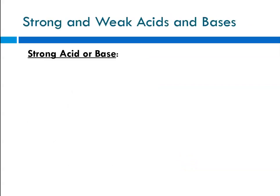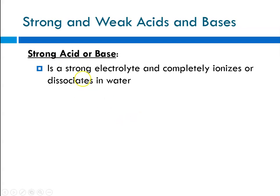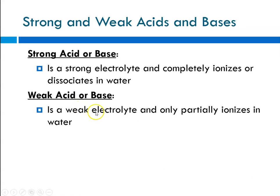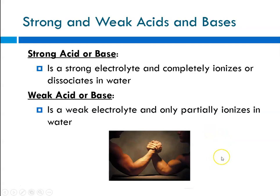We'll get into the other definitions of acids and bases shortly, but another very important designation is strength — whether they're strong or weak. By definition, a strong acid or base is a strong electrolyte and is completely ionized or dissociated in water. A weak acid or base is a weak electrolyte and only partially ionizes in water. The amount it ionizes is typically given as a percent — for example, 100% versus 50% ionized.